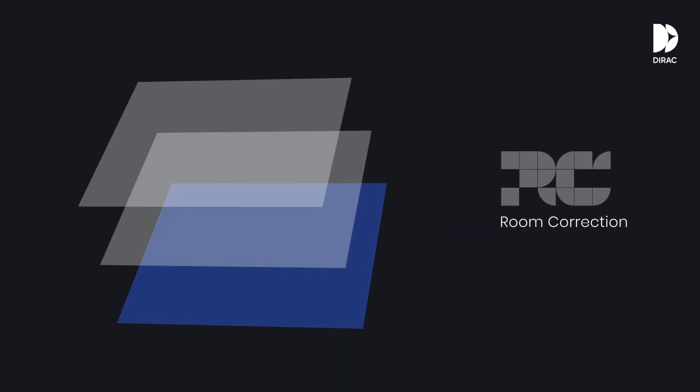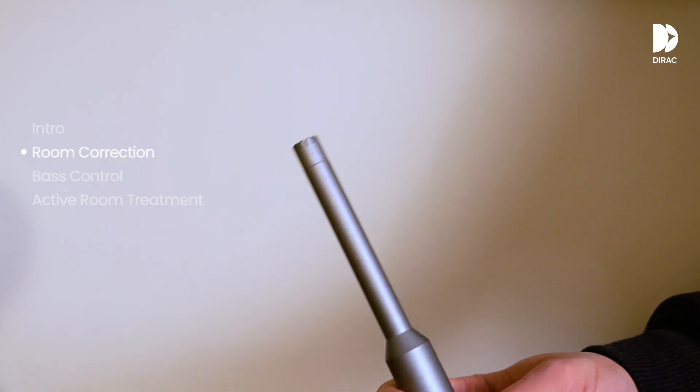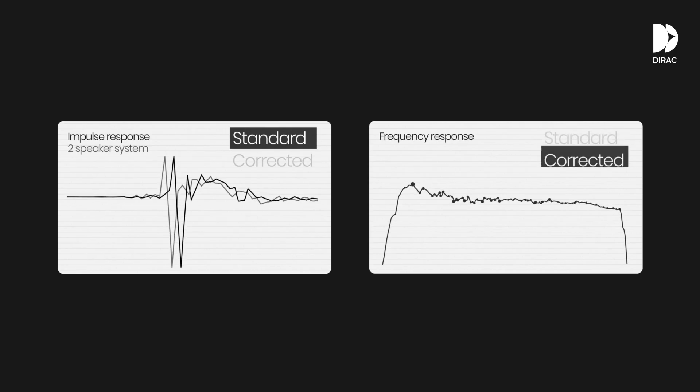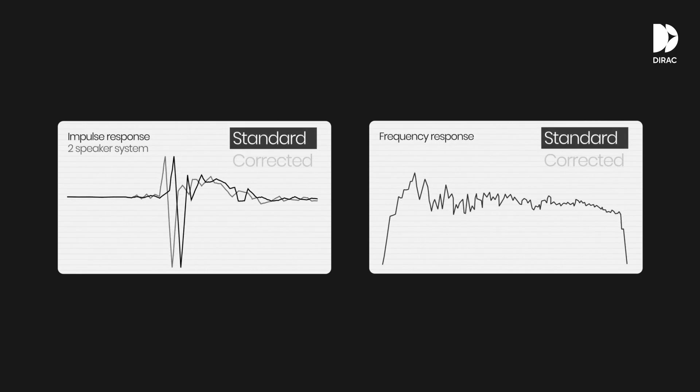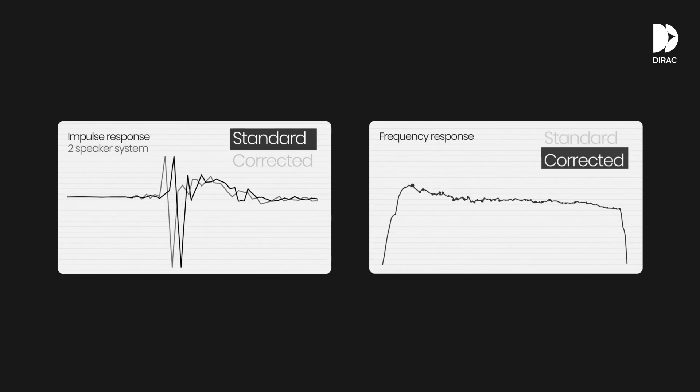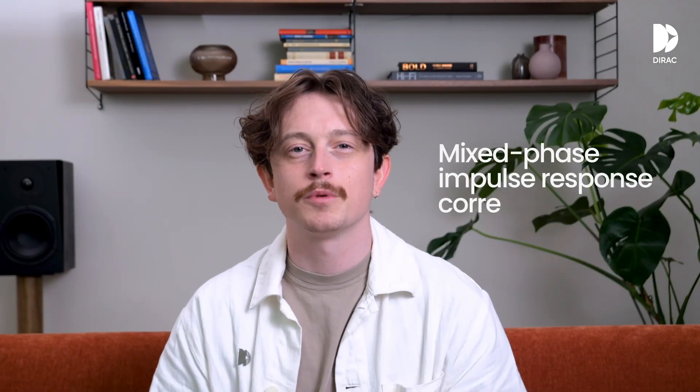Dirac Live room correction is the foundation. Using a microphone, Dirac Live takes a series of acoustic measurements of your speakers in your room, then does calculations to align both the time and frequency response for each speaker. You can be sure the sound arriving to you is accurate, and then make adjustments based on your personal taste. This approach uses something called mixed phase impulse response correction — it helps restore clarity, detail, and a precise soundstage.